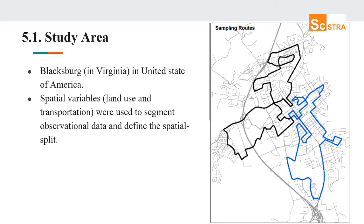The study area is Blacksburg, a small town with somewhat similar spatial features. Splitting the data set based on a specific location within Blacksburg, such as using a census tract ID number, would not be representative for spatial validation of prediction model performance. Therefore, the spatial variable — land use data and its transportation attributes — were used to segment observational data and define the spatial split.